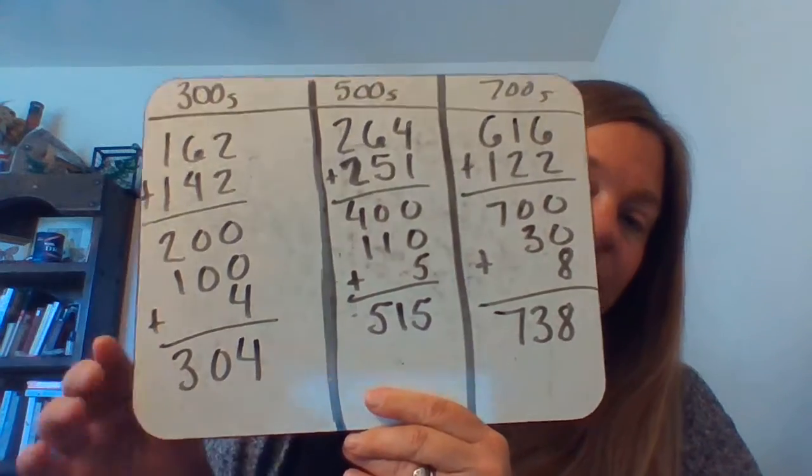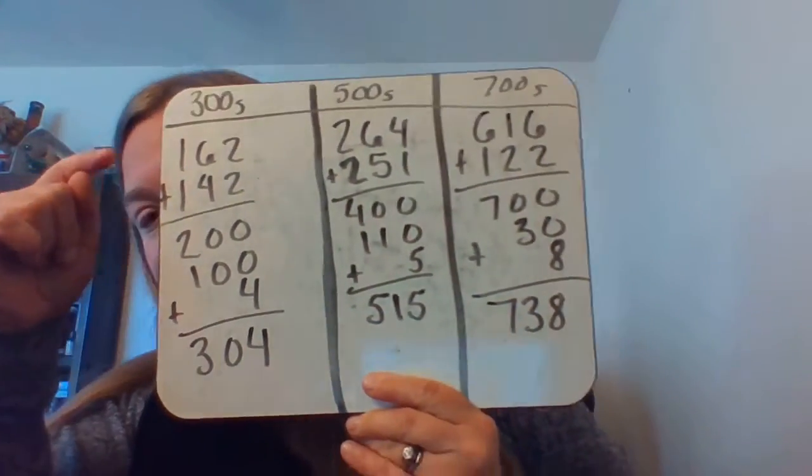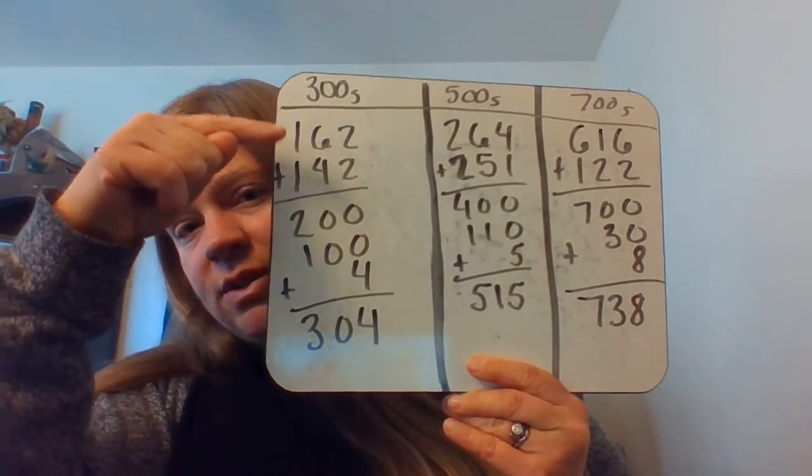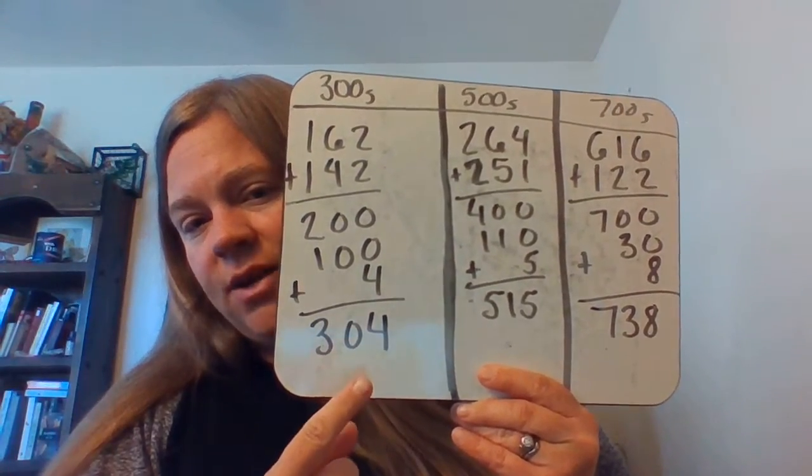So I did an example here to show you. So I just picked numbers. I made kind of an estimate to think about what numbers could I add together that would get me a number in the 300s.